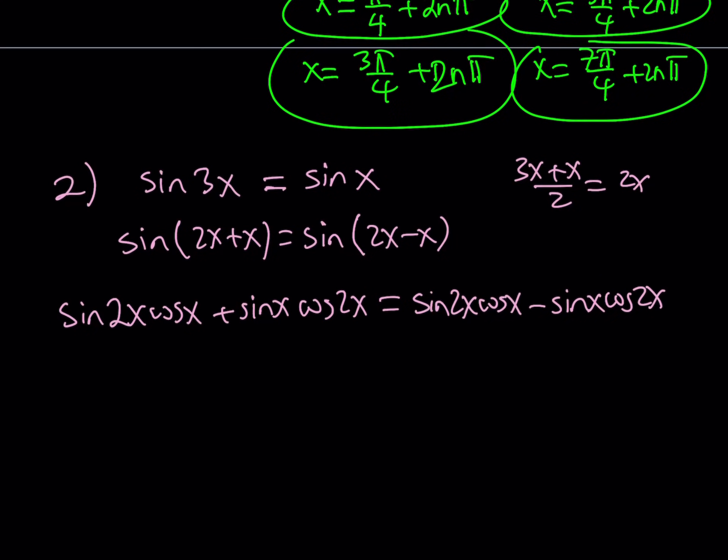So, the pattern is sine, cosine, sine, cosine. And then these two terms are going to cancel out. Let's put everything on the same side.